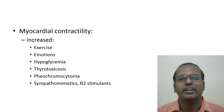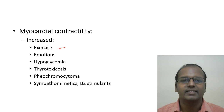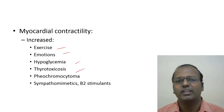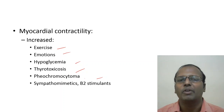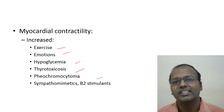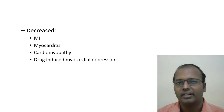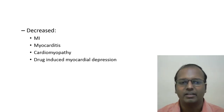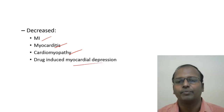Myocardial contractility affects S1 intensity. Contractility is increased in exercise, emotions, hypoglycemia, thyrotoxicosis, and with sympathomimetics like coffee, tea, and smoking — all increasing S1 intensity. When contractility is decreased — in myocardial infarction, myocarditis, cardiomyopathy, or drug-induced myocardial depression — S1 becomes soft.